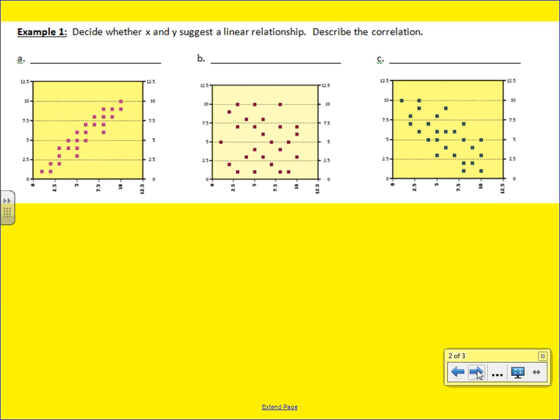We have some examples here. The first is we want to determine if x and y suggest a linear relationship. What that means is could you come up with a line that describes that data? And if you can, then that becomes linear.